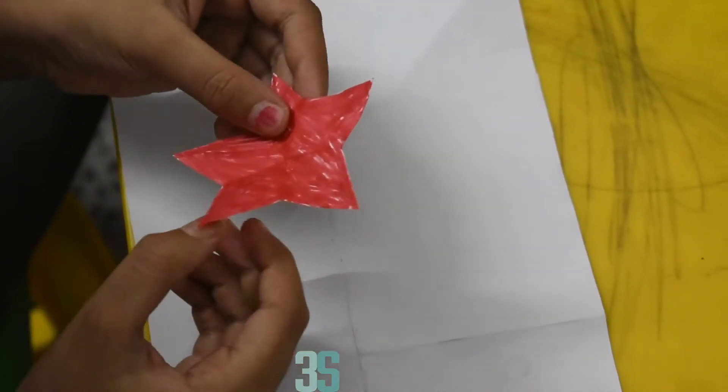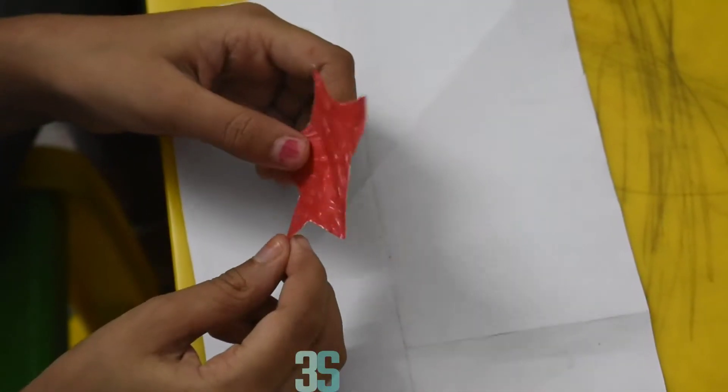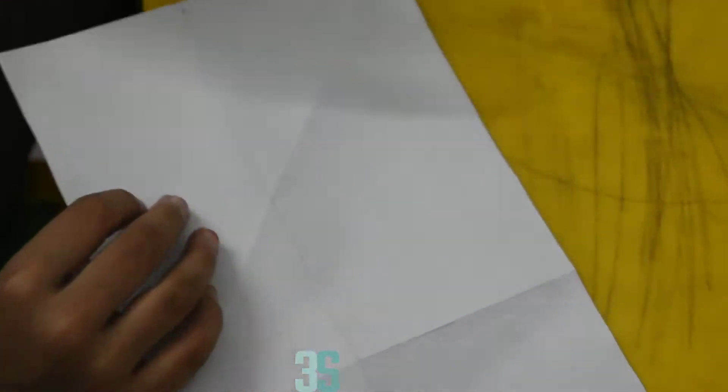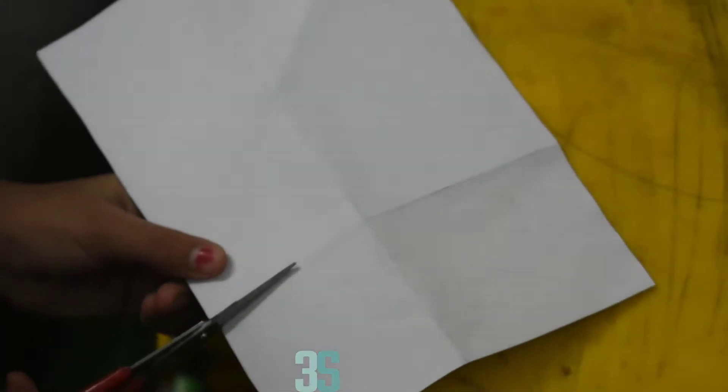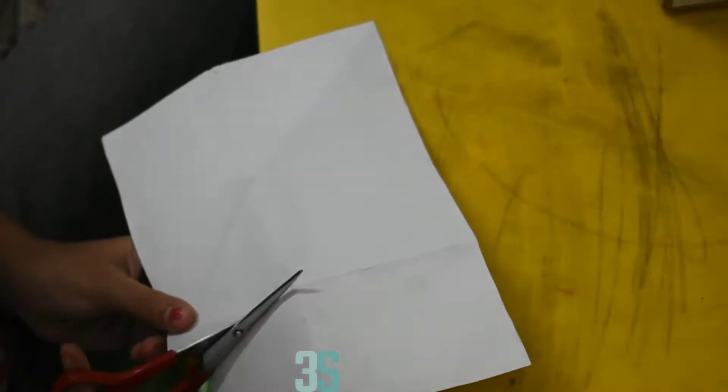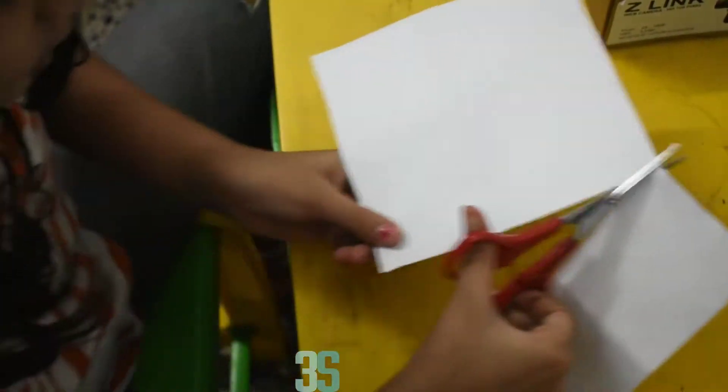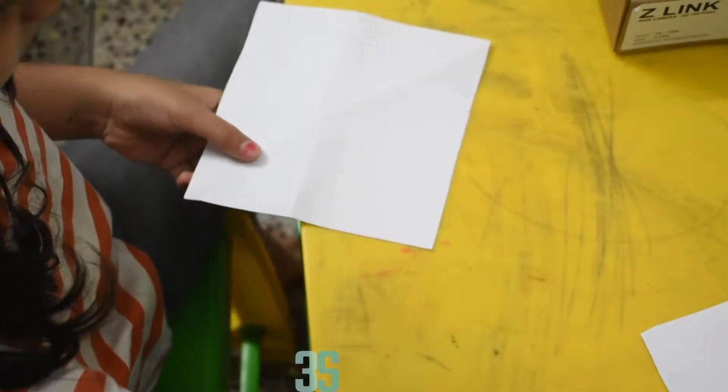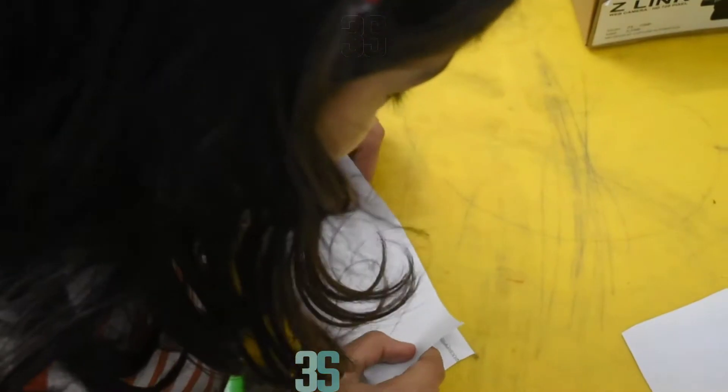We are going to make this type of star. Here is a square paper. This is the paper we will use. And now the new one will come.